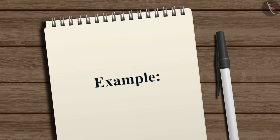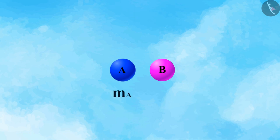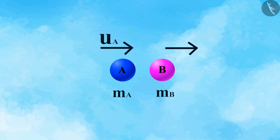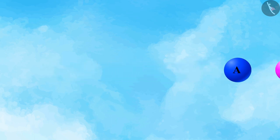Let us consider an example to understand this statement. Consider two balls A and B having masses M_A and M_B, such that they are travelling in the same direction along a straight line with velocities U_A and U_B respectively. Also, let us suppose that no external force is acting on these two balls.